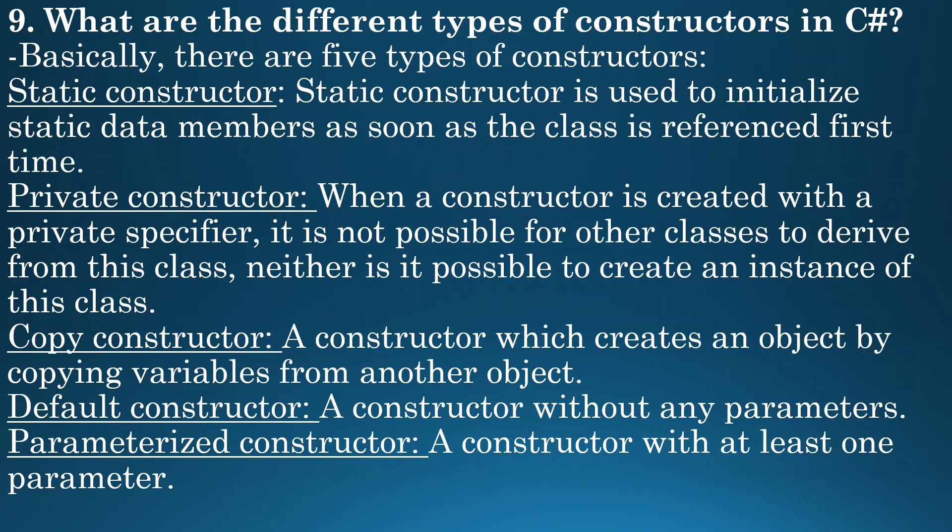Next question: what are the different types of constructors in C-Sharp? There are five types. First is static constructor — used to initialize static data members as soon as the class is referenced for the first time. Then comes private constructor — when a constructor is created with a private specifier, it is not possible for other classes to derive from this class, nor is it possible to create an instance of this class. Then comes copy constructor — a constructor which creates an object by copying variables from another object. Then comes default constructor — a constructor without any parameters. And the last is parameterized constructor — a constructor with at least one parameter.